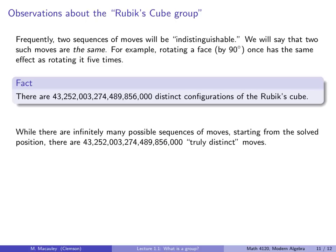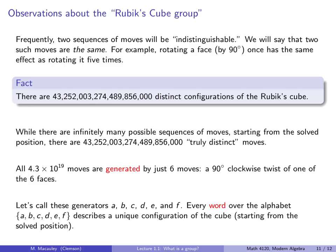So, all of these 4.3 times 10 to the 19 moves or actions are generated by just six moves. Again, there are six faces of the Rubik's Cube. And if you only allow yourself to rotate a face 90 degrees clockwise, then those six actions can generate all of these. So, let's call these generators A, B, C, D, E, and F. I don't care which one is which. But the point is, every word over the alphabet on these six letters describes a unique configuration of the cube starting from a fixed solved position.